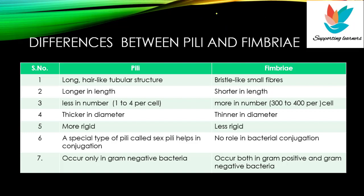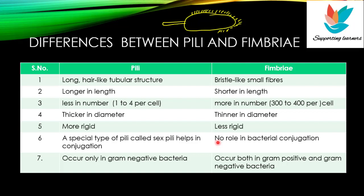Further differences: pili are broader tubular structures while fimbriae are short bristle-like structures. Pili are more rigid while fimbriae are less rigid. Pili play a role in conjugation while fimbriae do not have any role in conjugation. Pili are found only in gram-negative bacteria, while fimbriae are found in both gram-positive and gram-negative bacteria.